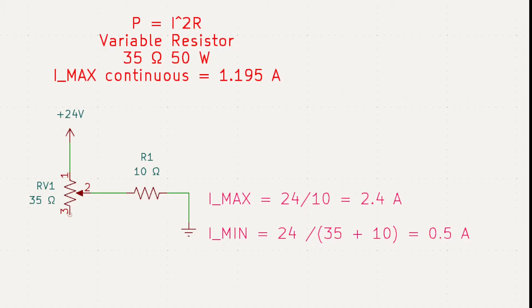This circuit is slightly more complicated. We have a 24-volt source. Our variable resistor is connected in the circuit as points one and two, and then we have a 10-ohm load.